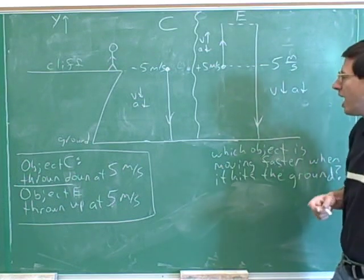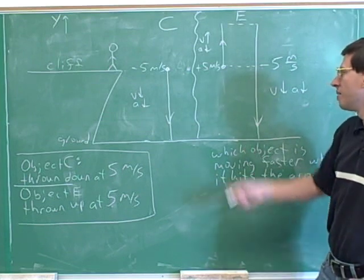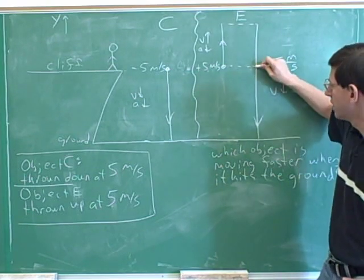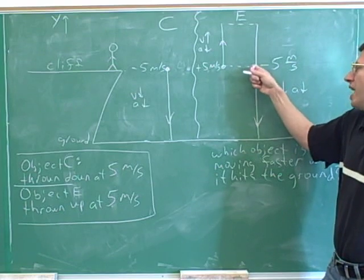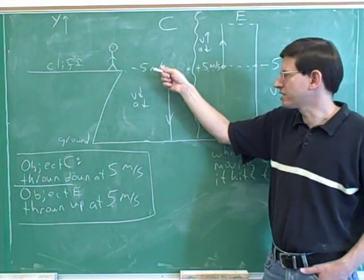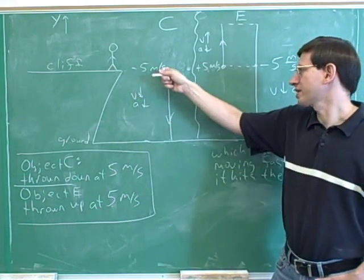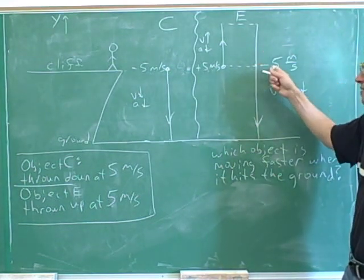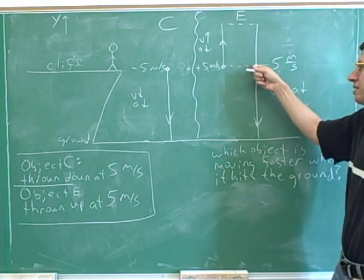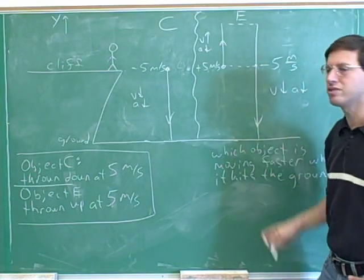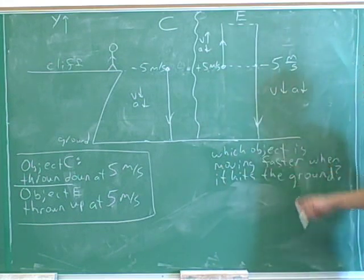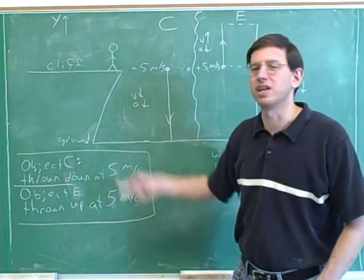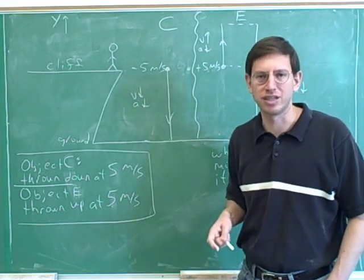From this point on, what happens to object E is going to look exactly like what happened to object C. Object C starts at the height of the cliff moving down at five meters per second, and object E is also at the height of the cliff moving down at five meters per second. Since they're both at the same height moving down at the same speed, by the time they hit the ground they should still be going at the same speed. So which object is going to be moving faster when they hit the ground? Neither — both of them will be moving at the same speed. This is just a repeat of the previous problem to reinforce the same ideas.